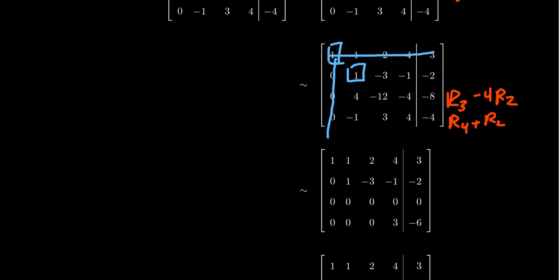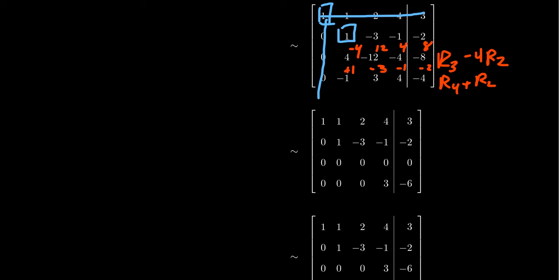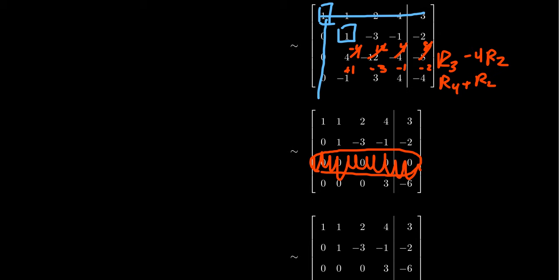Taking row 2 times negative 4 gives minus 4, positive 12, positive 4, and positive 8. Adding row 2 gives plus 1, minus 3, minus 1, minus 2. For row 3, everything cancels — we get a row of zeros, which is perfectly acceptable. This is not a contradiction; there are no zeros on the left equaling something non-zero on the right, so it's not evidence of inconsistency — it's an identity that tells us nothing. Rows of zeros go to the bottom since they're not useful. For row 4: 4 minus 1 is 3, and negative 4 minus 2 is negative 6.